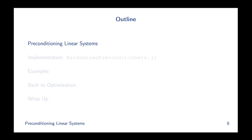What does the rest of the talk look like? First, we'll talk about linear systems — how to precondition them, the theory, how to construct good preconditioners, and the theoretical guarantees. Then we'll look at the implementation in the package randomizedpreconditioners.jl and some examples applied to large-scale linear systems. Finally, we'll bring it back to optimization and look at how this is used in OSQP. We'll wrap up with future work and pointers to the open source code.